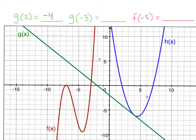Now let's look at when x is negative 3 on g — what's y? If I go to negative 3, negative 1, negative 2, negative 3, how high is the green line? It's up 1, isn't it? So g of negative 3 is positive 1.